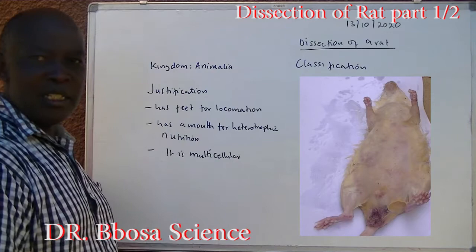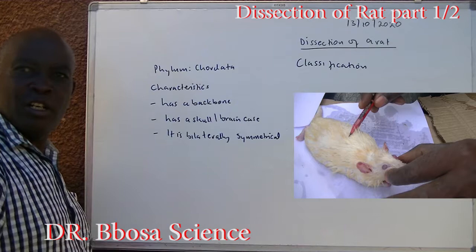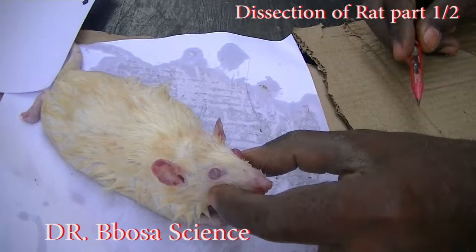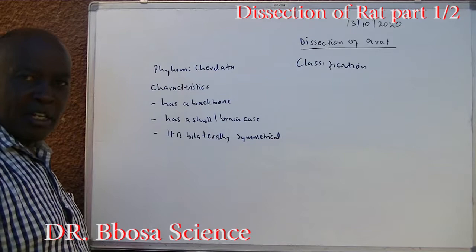Phylum Chordata characteristics: one, it has a backbone which can be felt when you touch its back. Two, it has a skull or brain case. Three, it is bilaterally symmetric — we can cut it into halves only once.